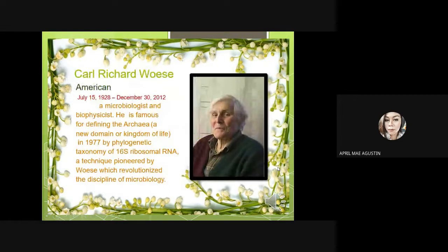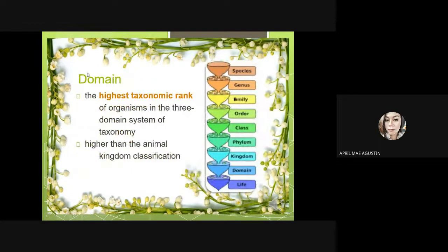Carl Richard Woese is a microbiologist and biophysicist who became famous for defining the Archaea — a new domain or kingdom of life — in 1977, through phylogenetic taxonomy of 16S ribosomal RNA, a technique pioneered by Woese that revolutionized the discipline of microbiology. A domain is defined as the highest taxonomic rank of organisms in the three-domain system of taxonomy, higher than the kingdom classification.